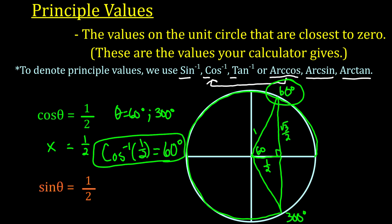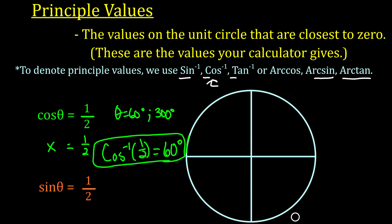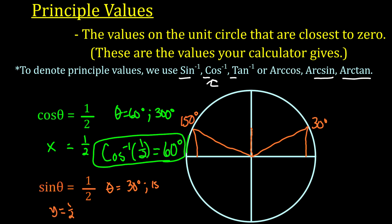Now let's look at sine θ = 1/2, which is when the y-value equals 1/2. Going up 1/2 in the y-direction, we find triangles at 30 degrees and at 150 degrees. So θ could be 30 or 150. For the principal value — capital Sine inverse of 1/2 — the answer is 30 degrees, the one closest to zero. That's the only answer principal values give.